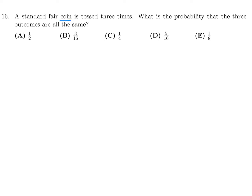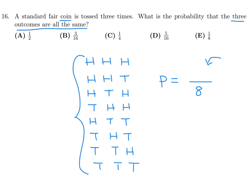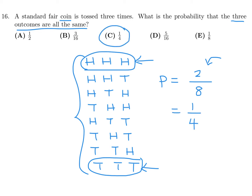A standard fair coin is tossed three times. What is the probability that all three outcomes are the same? You can have HHH, HHT, HTH, THH, or two tails: HTT, THT, TTH, or TTT. There are 8 possible outcomes total. The only times all three outcomes are the same is HHH and TTT — so that's 2 out of 8, which in lowest terms is one-fourth. So number 16, the answer is C.